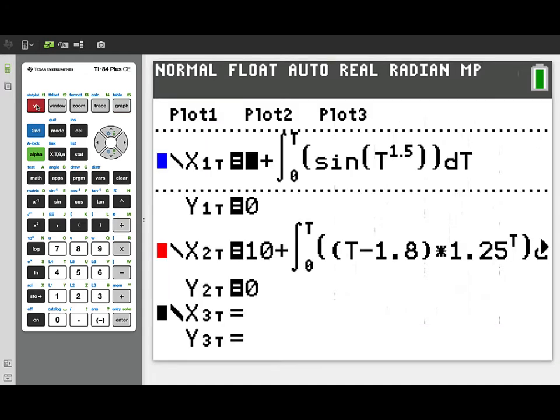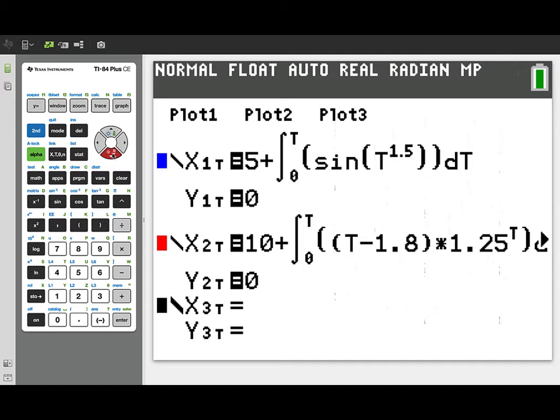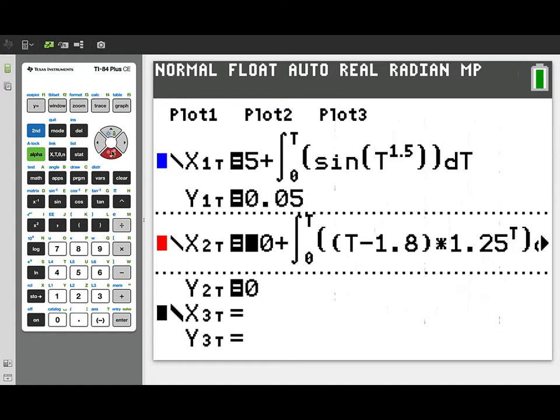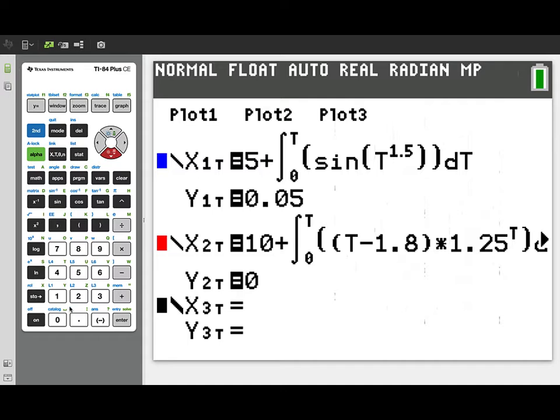Now, because it's right on the x-axis, I'm going to actually go back into my y equals menu and lift up the graphs just a little bit. So I'm going to make y1t 0.05 and the same for y2t. Now, what's that going to do?